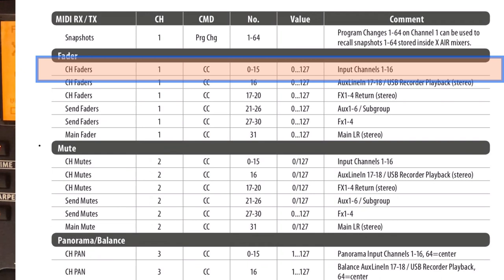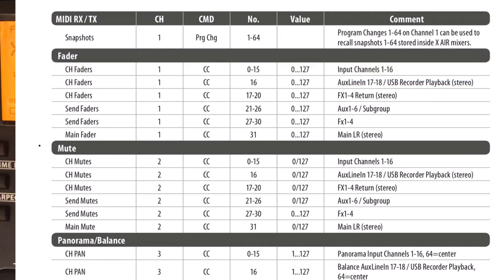There's no editor software for the Motor 61, so the only way to do this is manually. But as you will see, it's pretty straightforward. Once you have set up one of the sliders, you can use it as a template for the next slider without changing a lot of things.